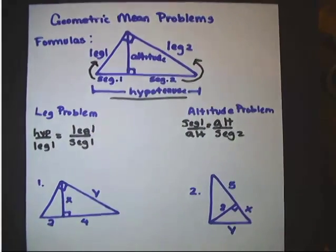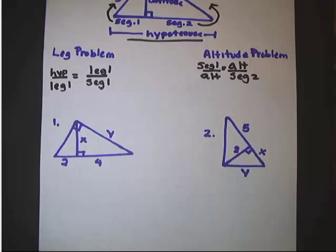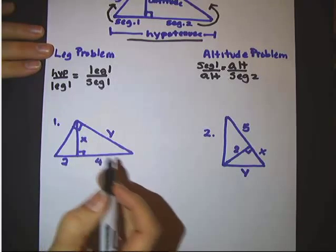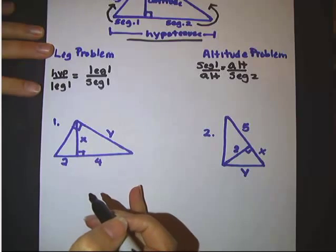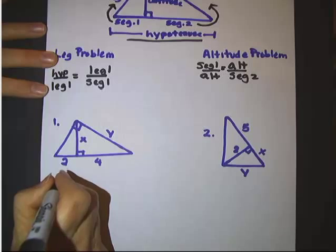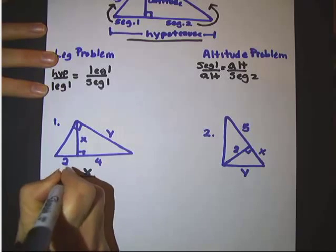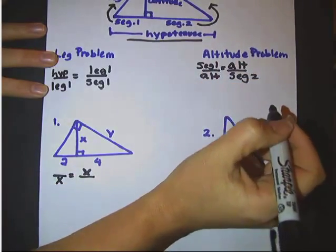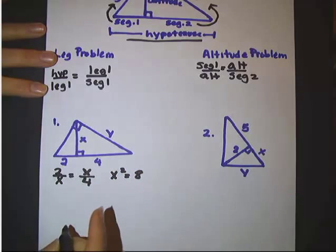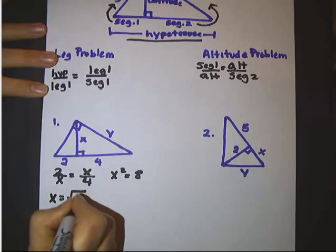Looking at number 1: x is an altitude and y is a leg, so we'll do an altitude problem and a leg problem. Starting with the altitude problem — find the altitude and write it twice. The altitude is x, and the two little segments that the altitude divides from the hypotenuse are 2 and 4. Cross-multiply: x squared equals 8. Square root both sides: x equals the square root of 8, which simplifies to 2 root 2.